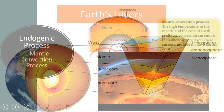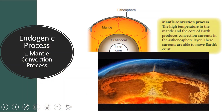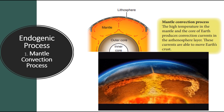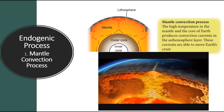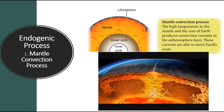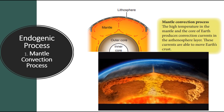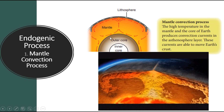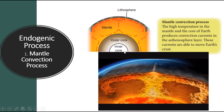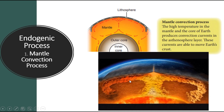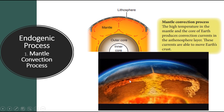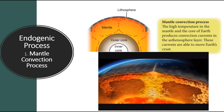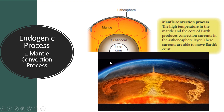The first example of endogenic process is the mantle convection process. The high temperature in the mantle and the core of the Earth produces convection currents in the asthenosphere layer. These currents are able to move Earth's crust.